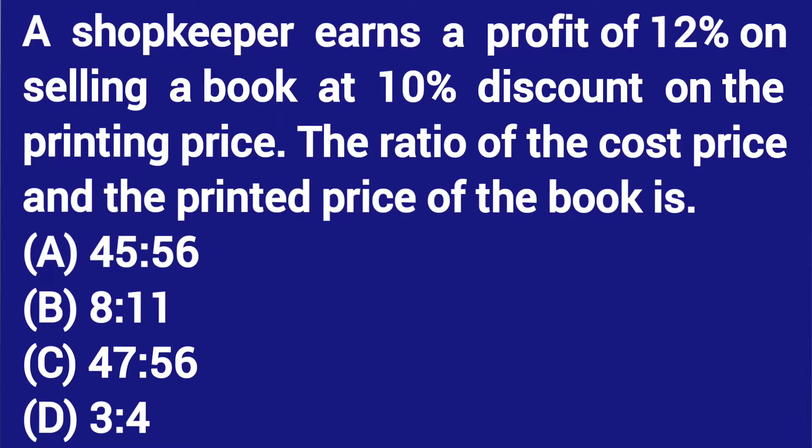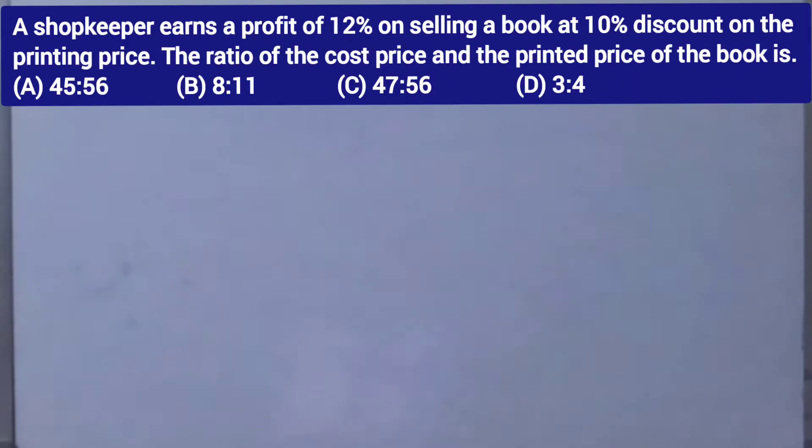A shopkeeper earns a profit of 12% on selling a book at 10% discount on the printing price. The ratio of the cost price and the printed price of the book is to be determined.